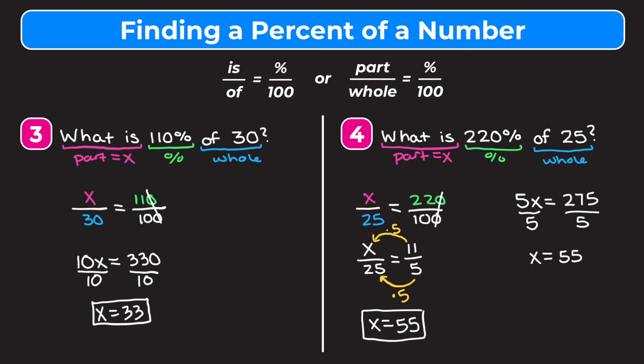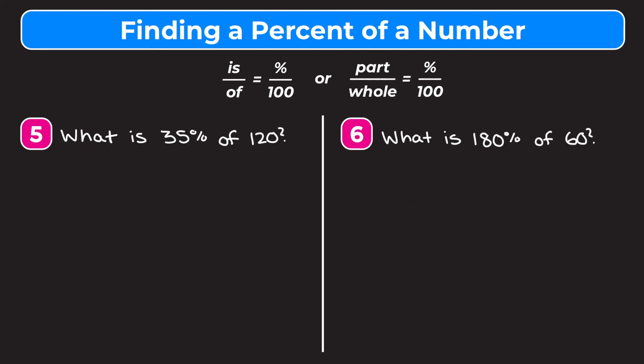For these last two examples, I encourage you to pause the video and try them on your own, then watch me walk through the problems to check your answers. Number five says: what is 35% of 120? We figure out all the parts of our proportion: 'what is' is our part and that's our X, 35% is our percent, and 'of 120' is our whole. So we have X over 120 equals 35 over 100.